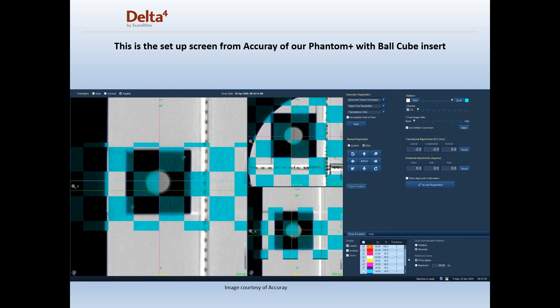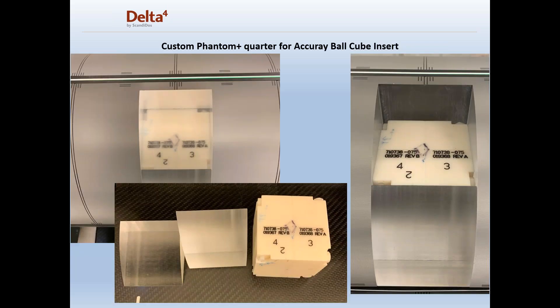With our system, the diodes are positioned at the coronal and sagittal planes internal and at isocenter of the phantom, which allows for inserts like the ball cube to be inserted into the upper left-hand quadrant of the phantom. This shows where they're going to start a patient QA, using KV imaging to position the phantom on the couch. When the ball cube is not being used, there's an acrylic replacement so it stays solid PMMA material.